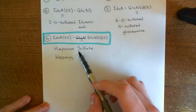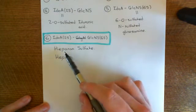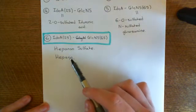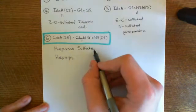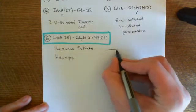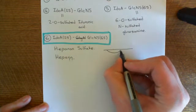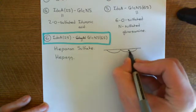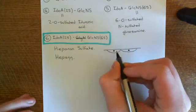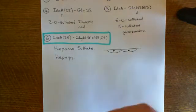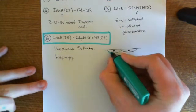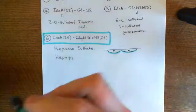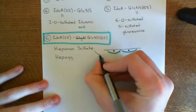Both are endogenously found polysaccharides, so your body contains both heparan sulfate and heparin, though they are located in different places. Heparan sulfate is found on the surface of endothelial cells lining the blood vessel, where you have these large glycosaminoglycan polymers — heparan sulfate — covering the surface of the endothelial cells.